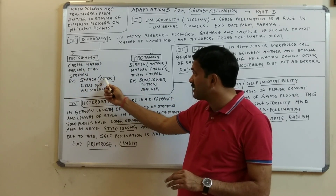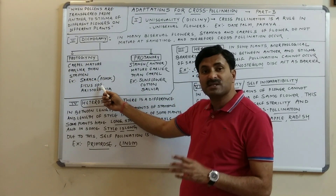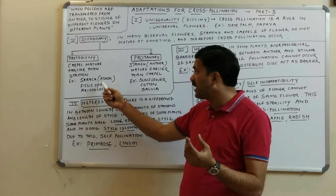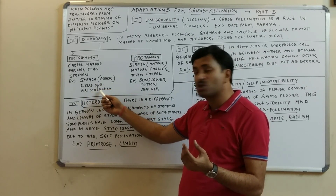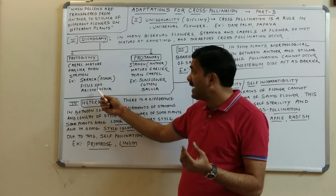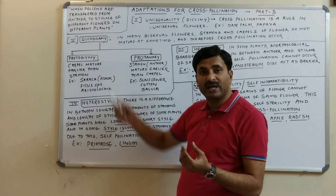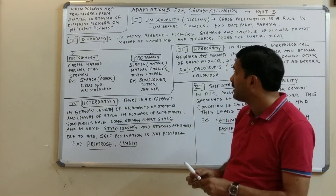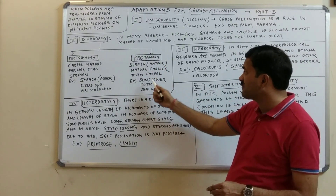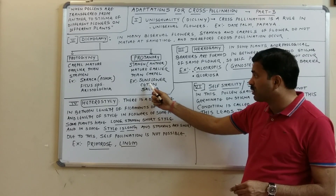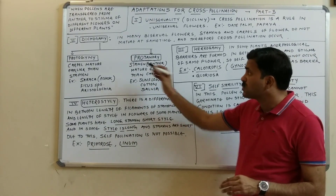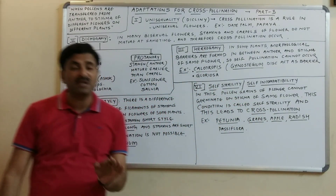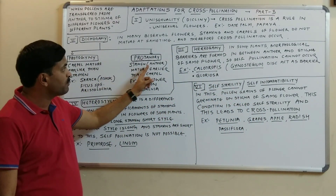Protogyny is found in the Cruciferae and Rosaceae families, as well as in Saraca indica (Ashoka), Ficus species such as peepal, and Aristolochia. Protandry is found in sunflower, cotton, and Salvia. So dicogamy, which is of two types — protogyny and protandry — favors cross-pollination.